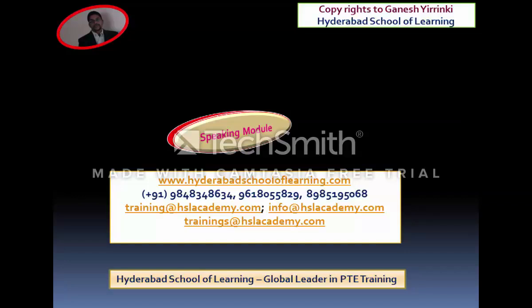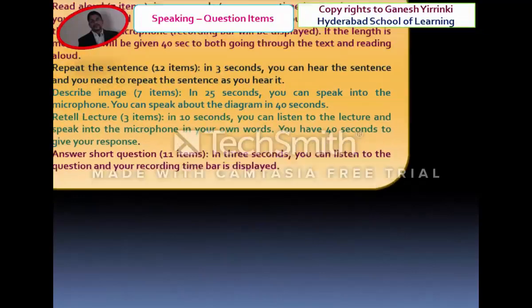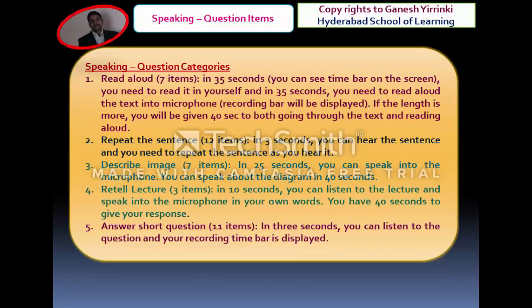Now let's move on to the Speaking module in detail. There are five question categories: Read Aloud, Repeat the Sentence, Describe Image, Retell the Lecture, and Answer Short Answer Questions. Read Aloud — maximum seven items. Repeat the Sentence — around 12 items maximum. Describe Image — around six to seven. Retell the Lecture — just three. Answer Short Answer Questions — around 10.